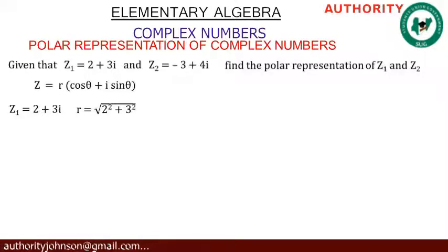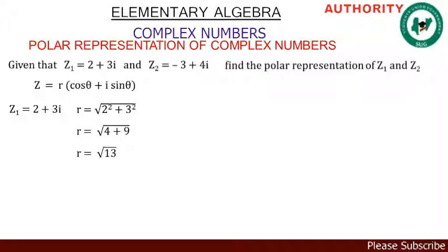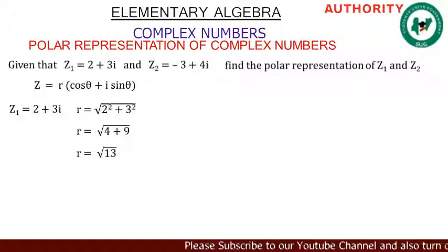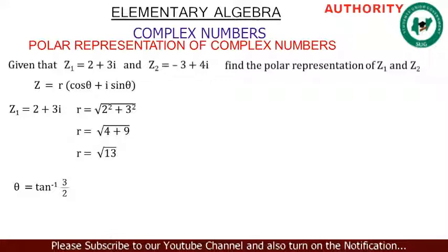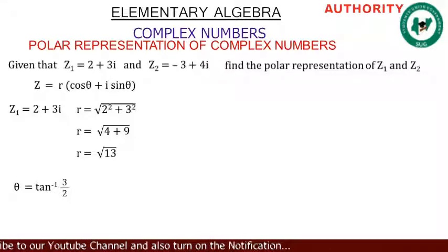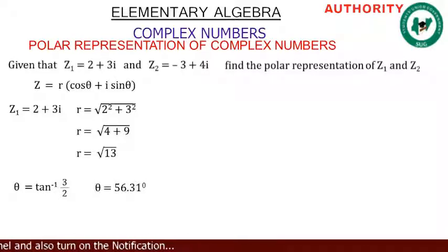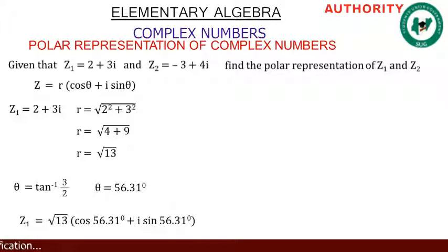For z₁: r equals √(x² + y²) = √(2² + 3²) = √(4 + 9) = √13. Then θ equals tan⁻¹(3/2), which gives us 56.31 degrees.